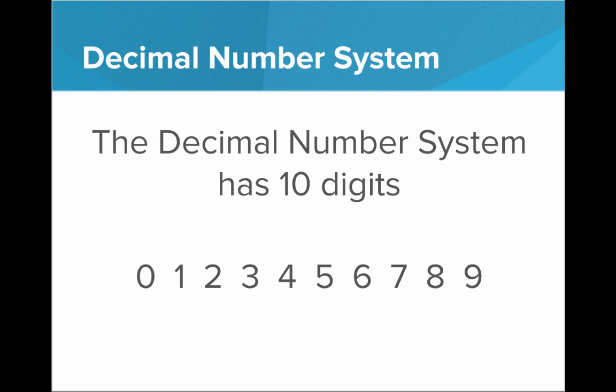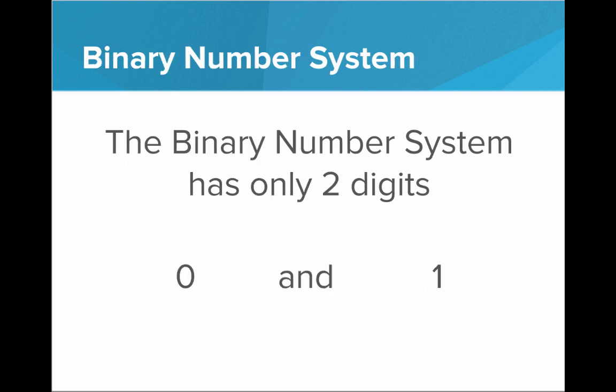But this is not the only number system. It turns out we can also represent numbers using only 2 digits, and that's the binary number system. The binary number system has a base of 2 — only 2 digits, 0 and 1. This is how computers represent numbers at the very base level, using only 0s and 1s. We'll see how this is possible in a minute.